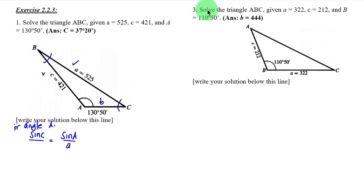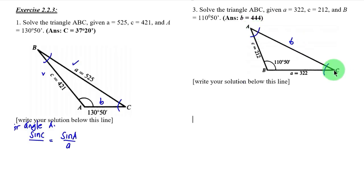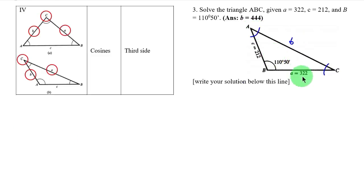Let us solve number three: solve the triangle ABC given side a equal to 322, side c equal to 212, and angle B equal to 110 degrees 50 minutes. The unknowns here are side b, angle A, and angle C. This is case number four since we have two sides and the included angle, so we are going to use the Law of Cosines to solve the third side.